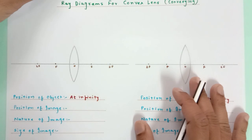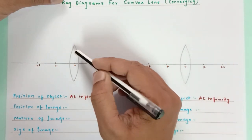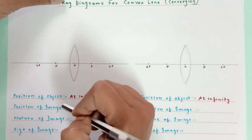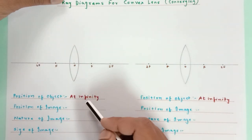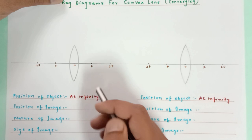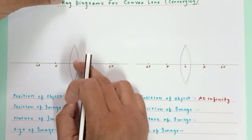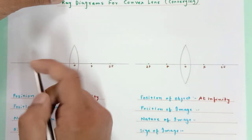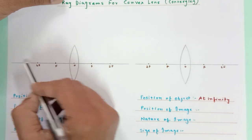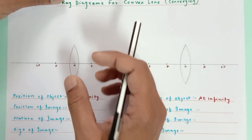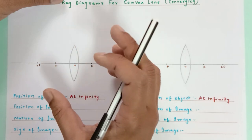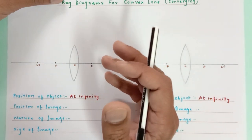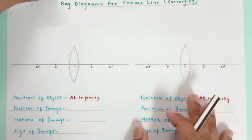Now let's start. Here we have a convex lens — this is f, this is 2f. The first case: we are going to keep the object at infinity. Infinity means the object is very far away from the lens. Practically, if we put a lens in front of the sun, then the sun is said to be an infinite object with respect to the lens.